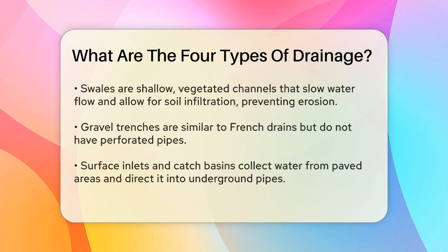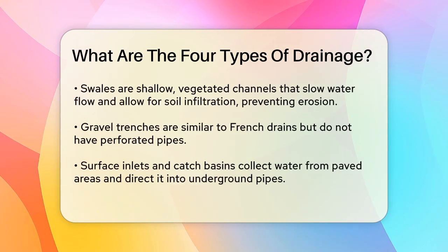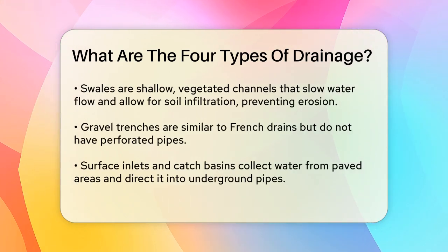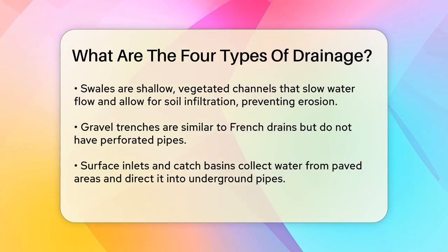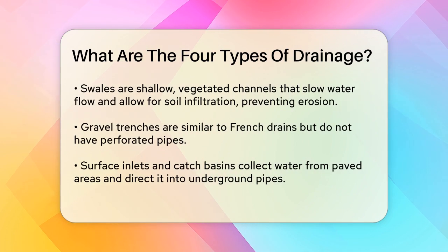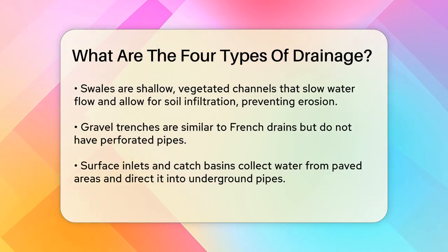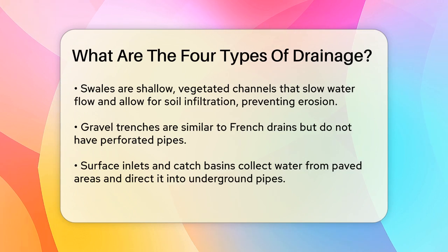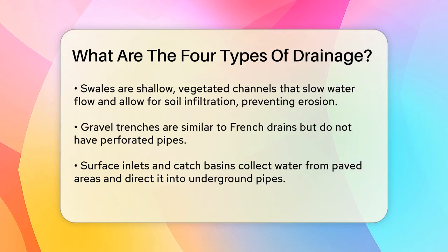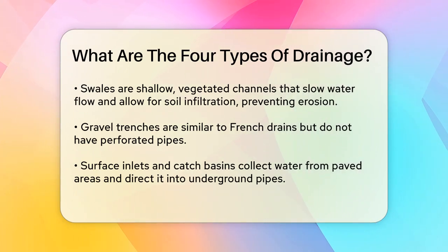Swales are another type. These are shallow, vegetated channels that slow down water flow, allowing it to infiltrate the soil and prevent erosion. You also have gravel trenches, which are similar to French drains but without the perforated pipe, and surface inlets and catch basins that collect water from paved surfaces and direct it into underground pipes.